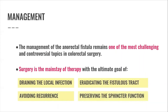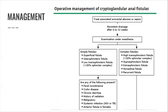This is the management algorithm for cryptoglandular fistulas. The abscess is initially treated through incision and drainage, then observed for persistence or drainage. If persistence is noted, an anorectal fistula is suspected, for which further surgery is indicated — examination under anesthesia to determine whether the fistula is simple or complex. What makes a fistula complex is involvement of more than 30% of the sphincter complex.